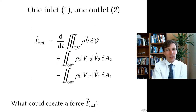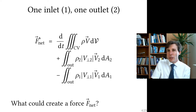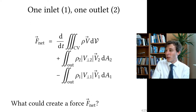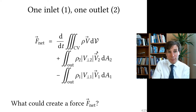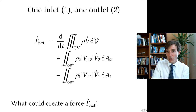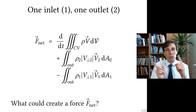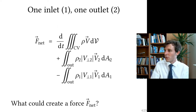Let's take a case with only one inlet and one outlet. The net force equals the change in time of momentum inside the control volume, plus the integral over outlet area two of density times the perpendicular velocity component times the vector velocity V2, minus the same integral for the incoming velocity. We integrate over the whole area to capture any non-uniformities in the velocity distribution.